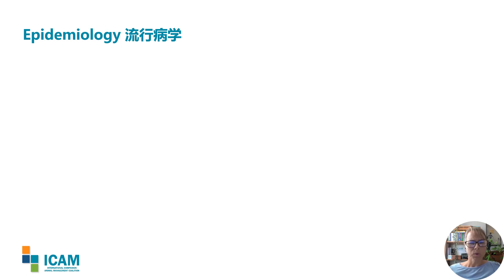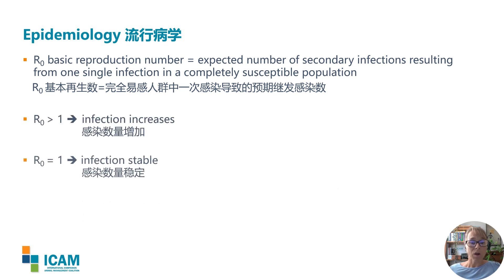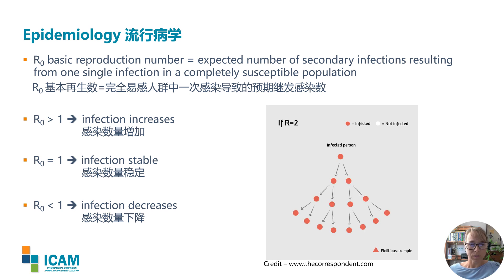I want to start with a quick run through the basic epidemiology underlying our rabies control efforts. The basic reproduction number R0 tells us on average how many animals an infected animal can infect — and the same for people. This assumes a completely susceptible population. COVID-19 has brought this term into public discourse. When R is greater than one, the number of infections increases; when R equals one, infections remain stable; and when it's less than one, the infection decreases.